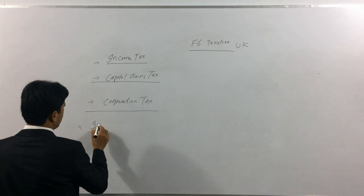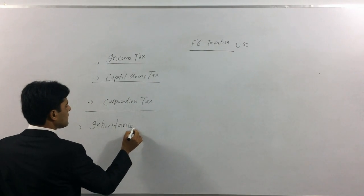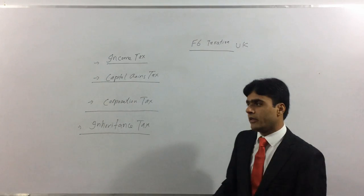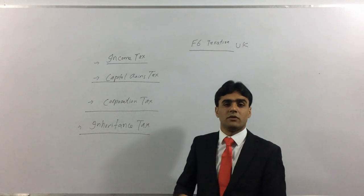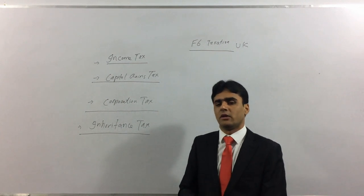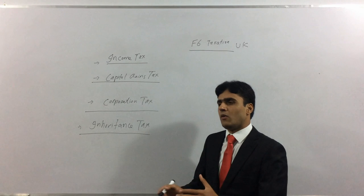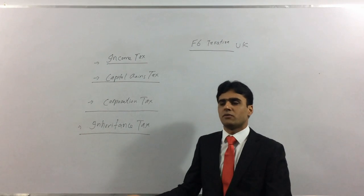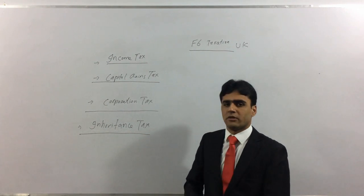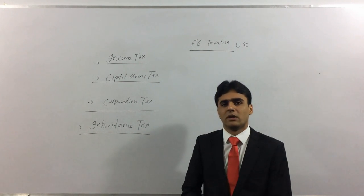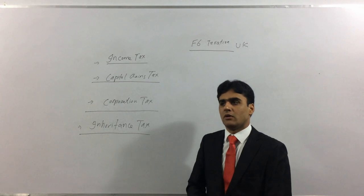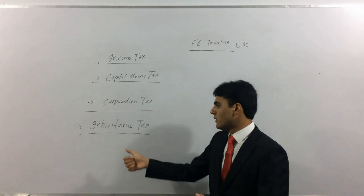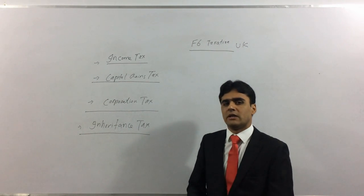Another major topic is inheritance tax. Inheritance tax is paid on inheritance — when someone dies and their assets are transferred to their children or heirs. The government requires tax on that transfer. For example, if Mr. A dies leaving a property worth £1 million, the heirs will need to pay some tax on it. For now, think of it simply as a death tax. You may also have to pay it during your lifetime, but we will cover that in detail later.